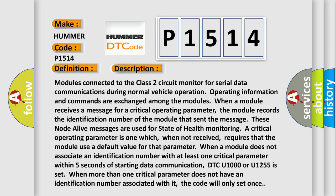These node alive messages are used for state of health monitoring. A critical operating parameter is one which, when not received, requires that the module use a default value for that parameter. When a module does not associate an identification number with at least one critical parameter within five seconds of starting data communication, DTC U1000 or U1255 is set. When more than one critical parameter does not have an identification number associated with it, the code will only set once.